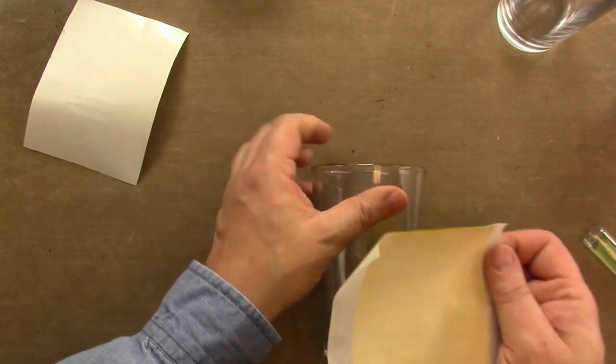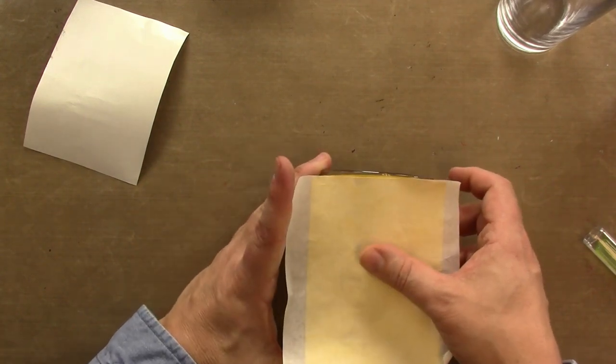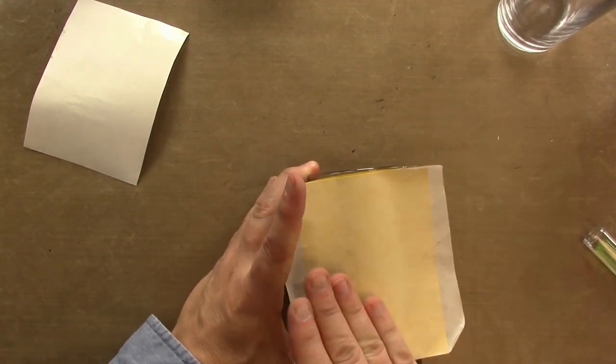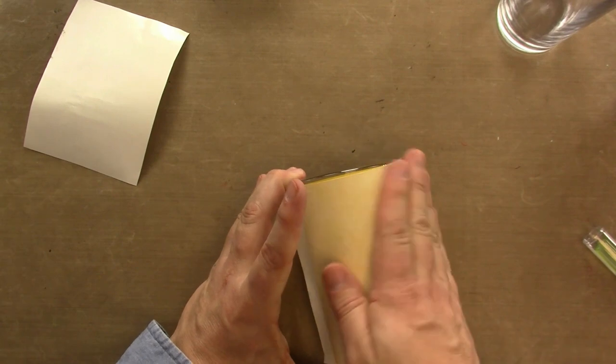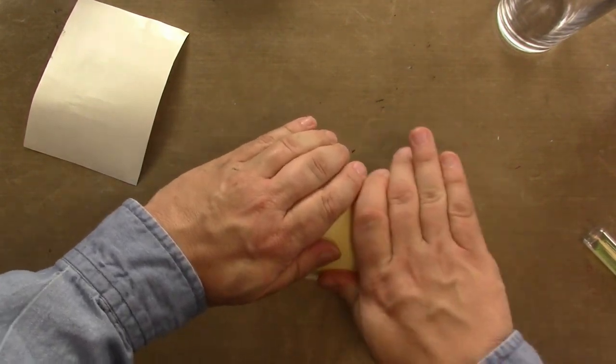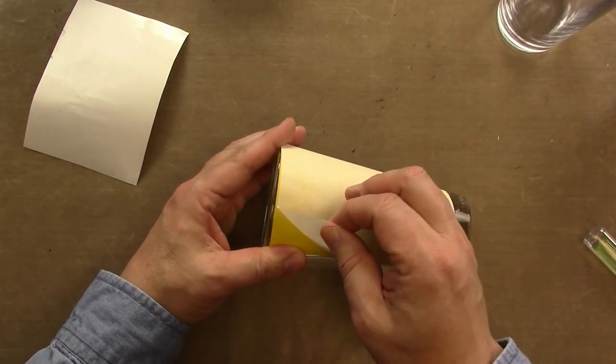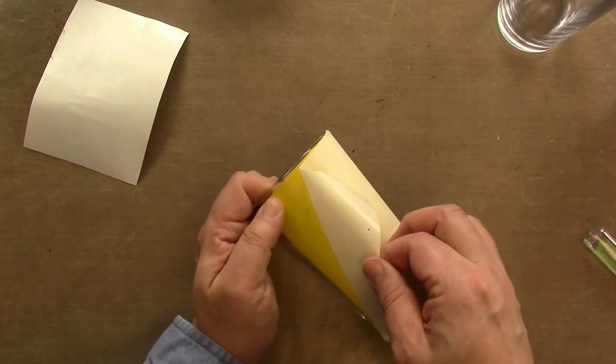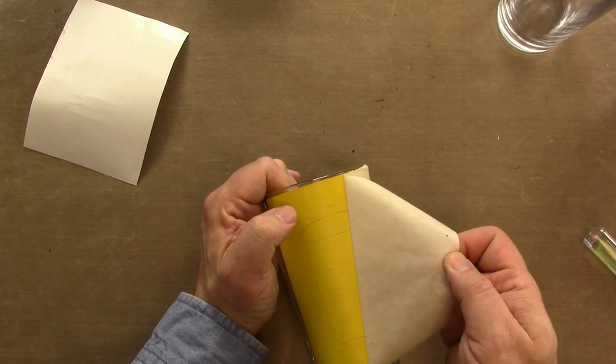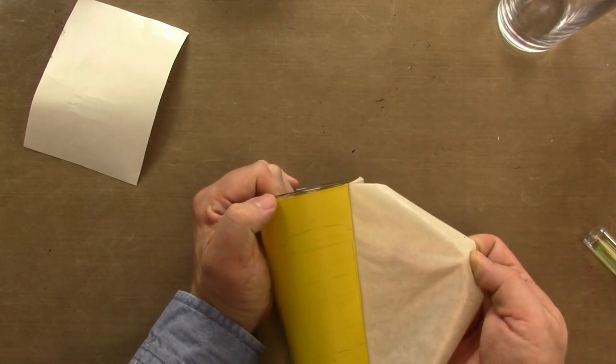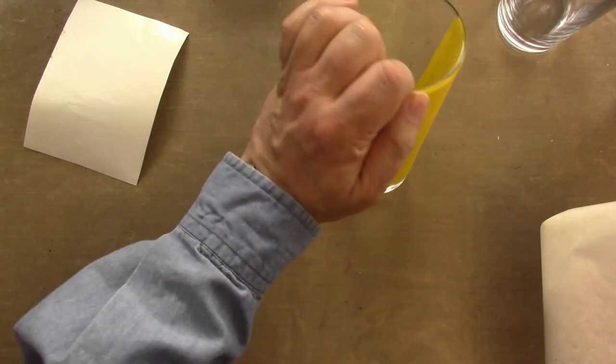So now I have my whole stencil on this transfer sheet. Now I can go ahead and apply it to my glass. I'm going to work my way down the center and then over to the sides. Make sure it's burnished down really well.